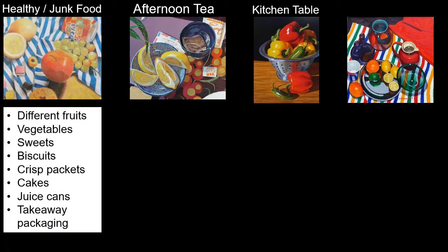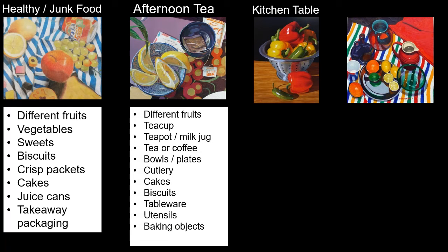For healthy food versus junk food, you would include different fruits or vegetables contrasted with sweets and treats — that could include chocolate wrappers or empty juice cans, anything interesting to draw. For afternoon tea, you're trying to set a scene: this could include a tea cup, a teapot, a coffee mug or pot, biscuits, or even a picnic — objects that would set that scene.